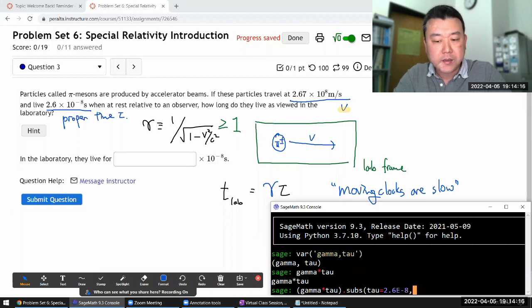Let me do it this way. I'm gonna just write out the expression: one divided by square root of one minus v, that's 2.67 times 10 to the power of 8...